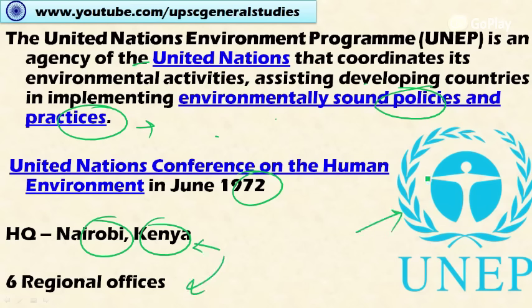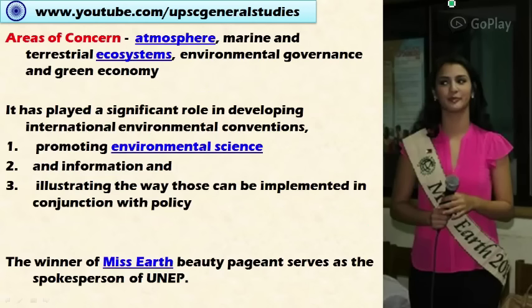UNEP is active in various areas related to environment. The main areas of concern are: atmosphere, including global warming, climate change, and reducing greenhouse gases; marine and terrestrial ecosystems, including biodiversity conservation and reducing threats to biodiversity; and environmental governance and green economy, assisting developing countries in formulating eco-friendly policies and programs.